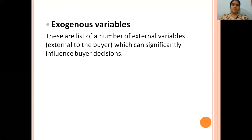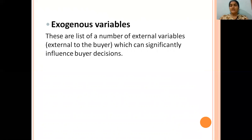The fourth variable is exogenous variables. These are a number of external variables — external to the buyer — which can significantly influence buyer decisions. They are not internal but outside variables, yet these external variables influence the buyer in making their buying-related decisions. This is also one of the variables under the Howard-Sheth model.